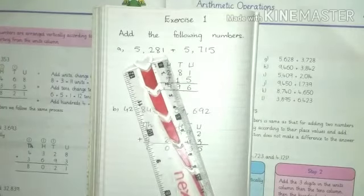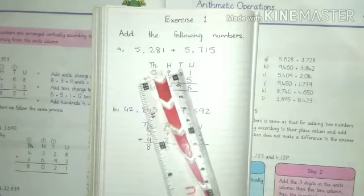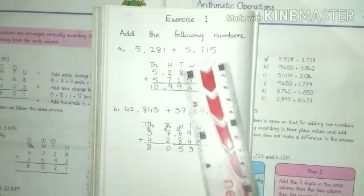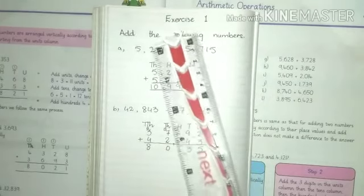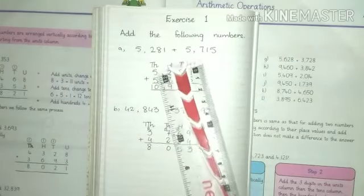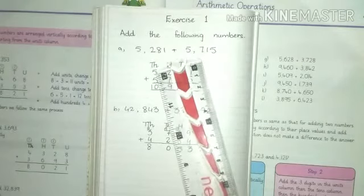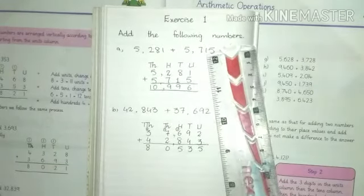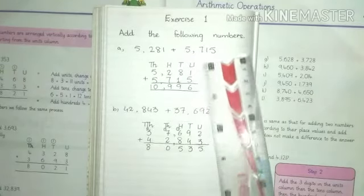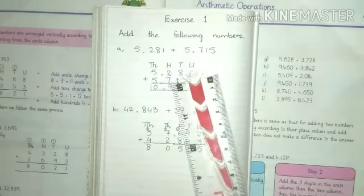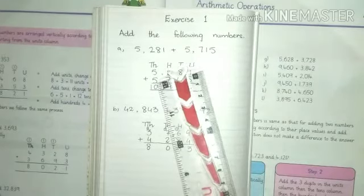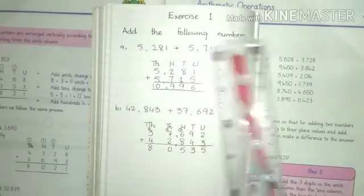Then we will put these numbers in these place values. So we know 1 is at unit place, 8 is at tens place, 2 is at hundred place and 5 is at thousand place. In the same way 5 is at unit place, 1 is at tens place, 7 is at hundred place and 5 is at thousand place. So what we will do? Now we will start addition.